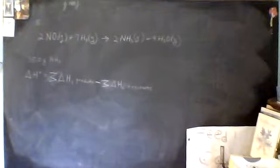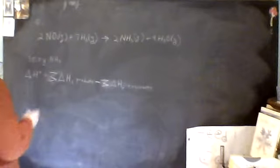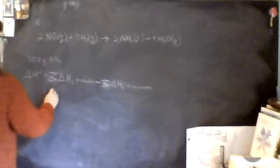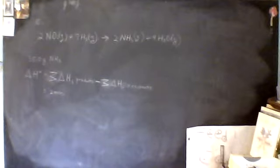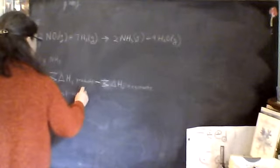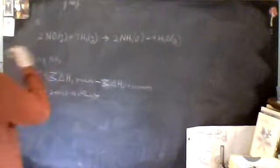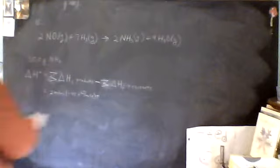Let's start with the products, actually. Let's write out the products. NH3 gas, that's negative 45.9 kilojoules per mole plus H2O. We have 4 moles of that.